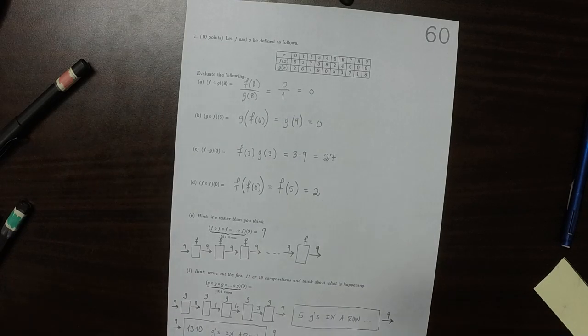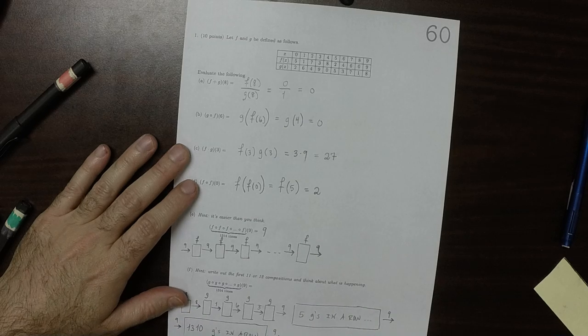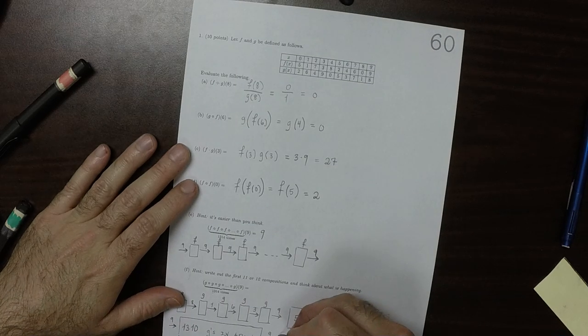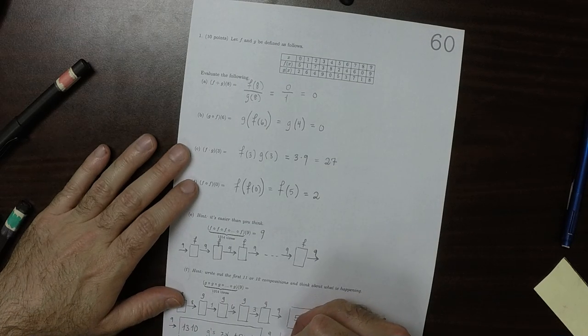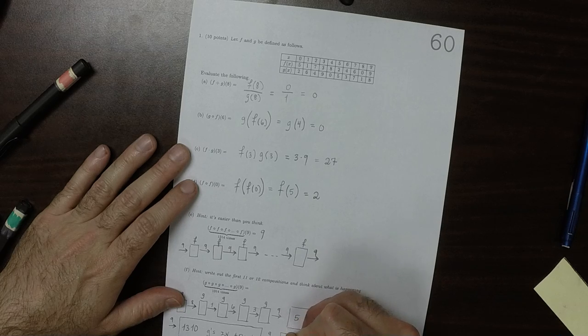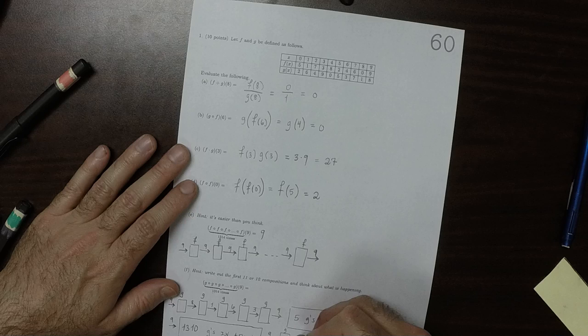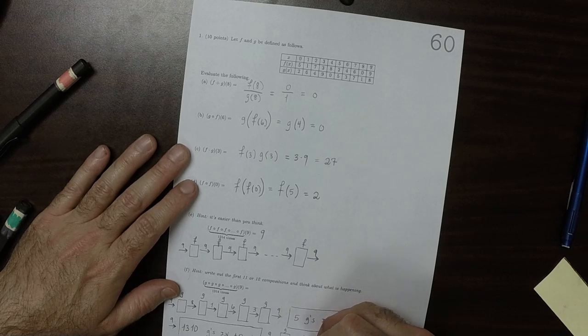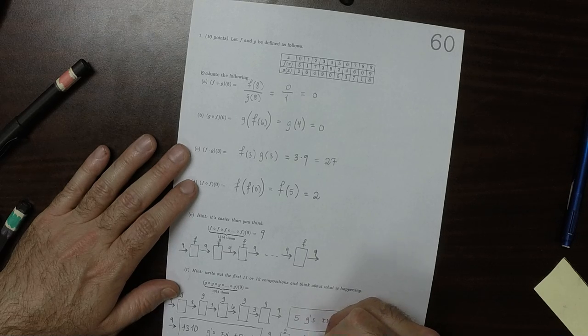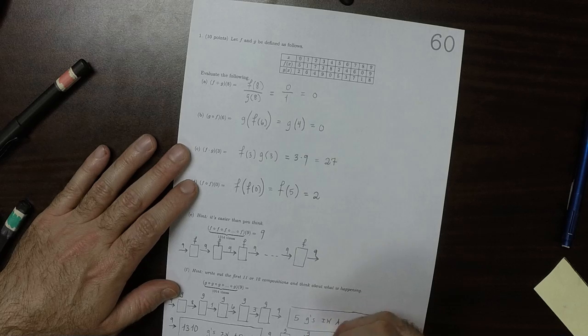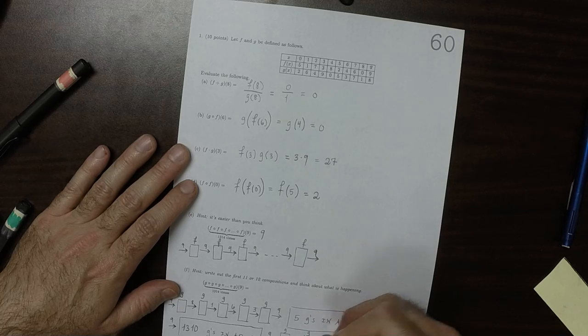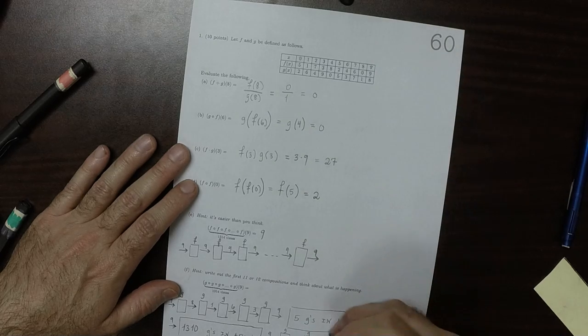So after that, there'd only be 4 more to go. After 1,310 of them, so that'd be 1,310, and then 1,311, that'd give us an 8. That'd give us a 1.